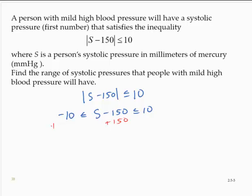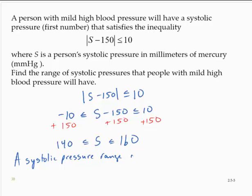Adding 150 to all three parts of the inequality, we find that 140 is less than or equal to s, which is less than or equal to 160. So a systolic pressure range of 140 to 160.